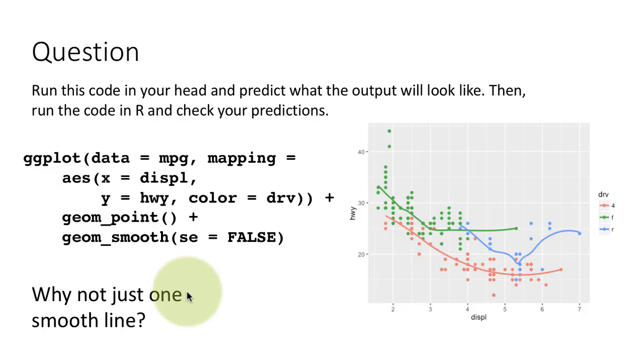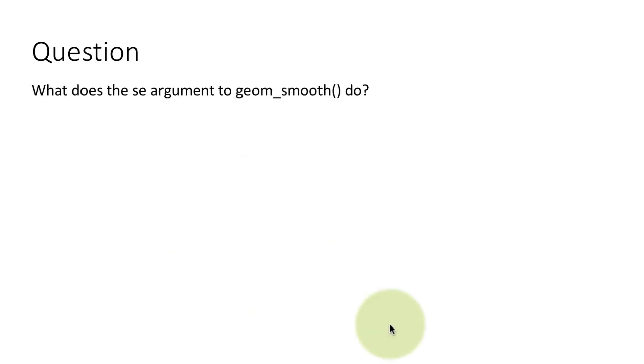Again, why not just one smooth line? Because color equals drive. What does the se argument to geom_smooth do? Well, we know now. It controls whether the confidence limits are shown or not.